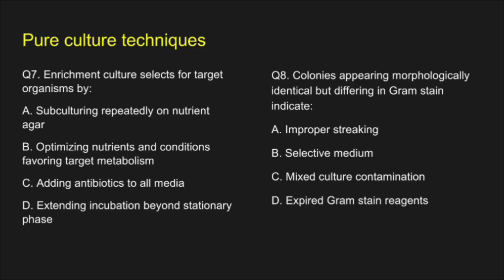Question 7. Enrichment culture selects for target organism by — A. Subculturing repeatedly on nutrient agar, B. Optimizing nutrients and conditions favoring target metabolism, C. Adding antibiotics to all media, D. Extending incubation beyond stationary phase. The correct answer is option A: Subculturing repeatedly on nutrient agar.